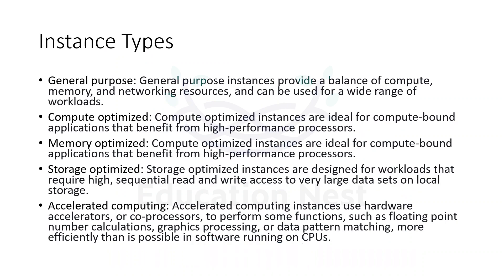Now let's understand the different types of instances. There are these types: general purpose, compute optimized, memory optimized, storage optimized, and accelerated computing. When you want a balance of compute, memory, and networking resources, then general purpose is a good choice.